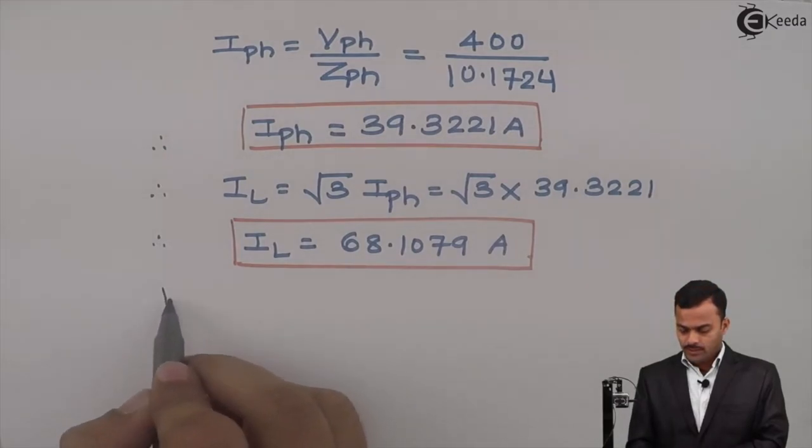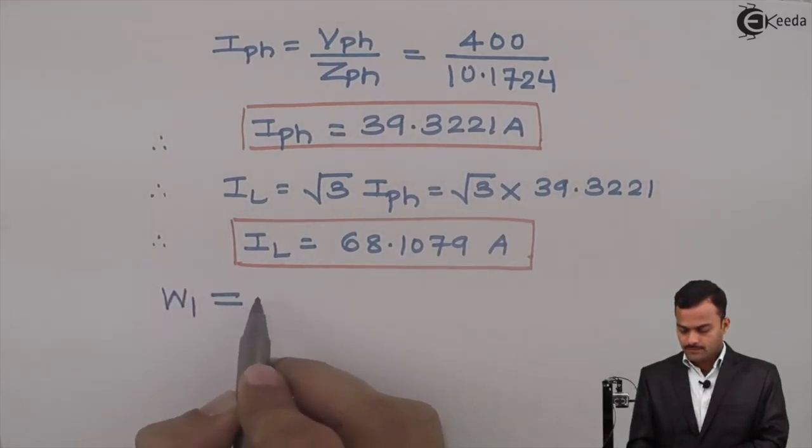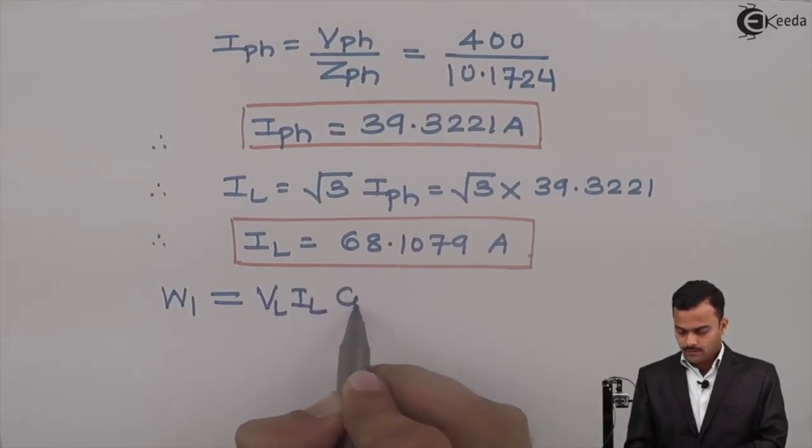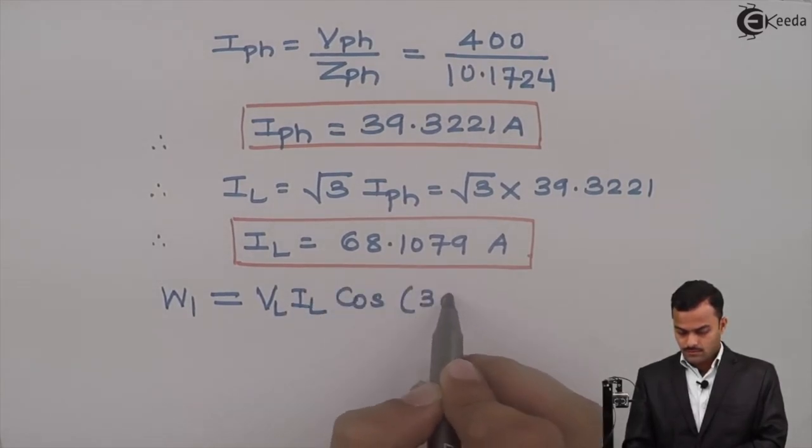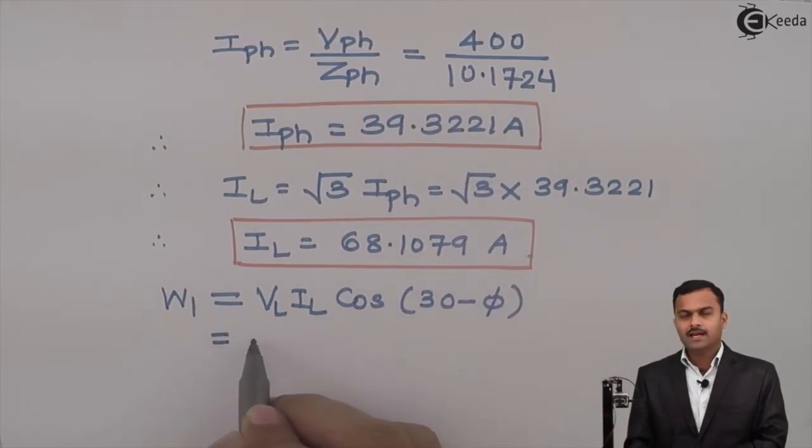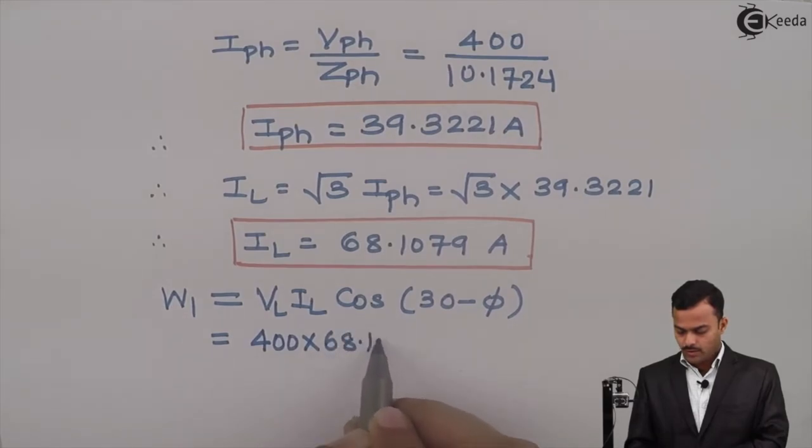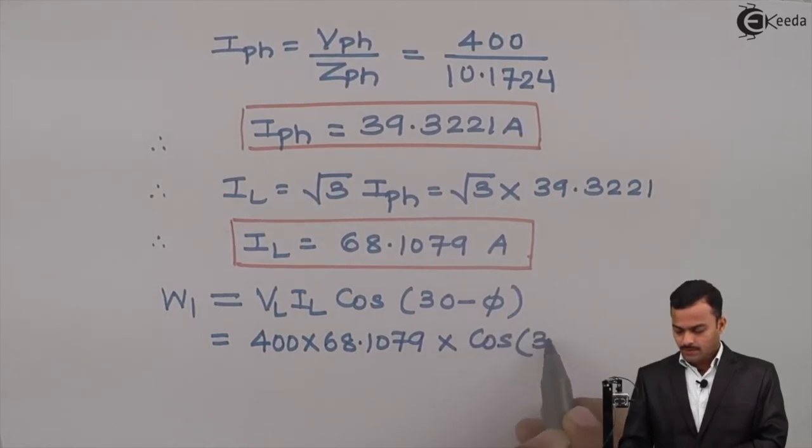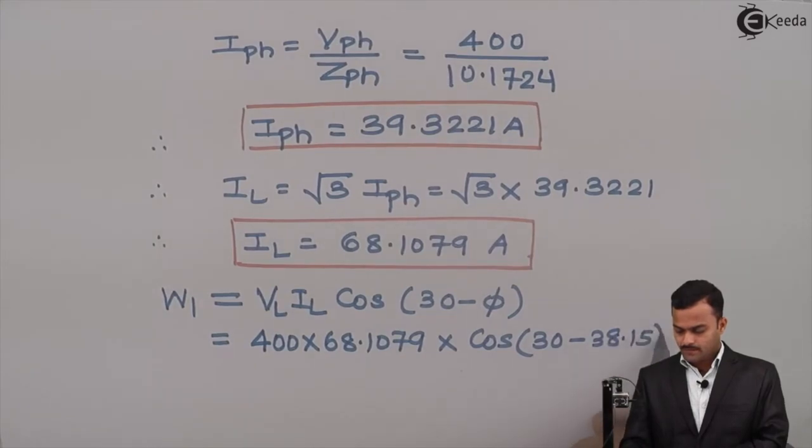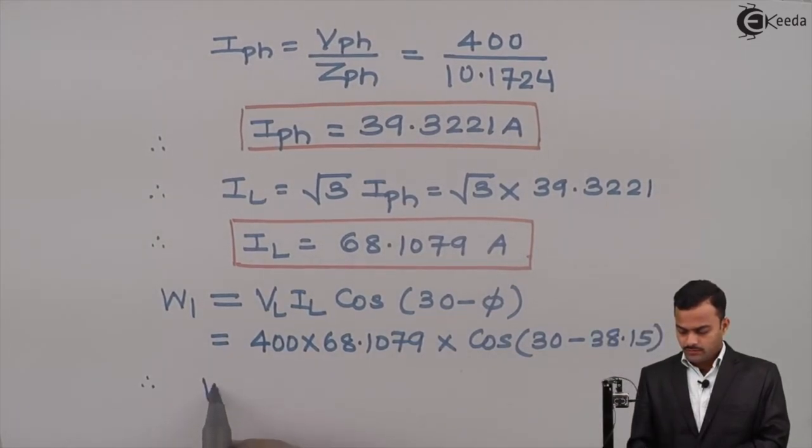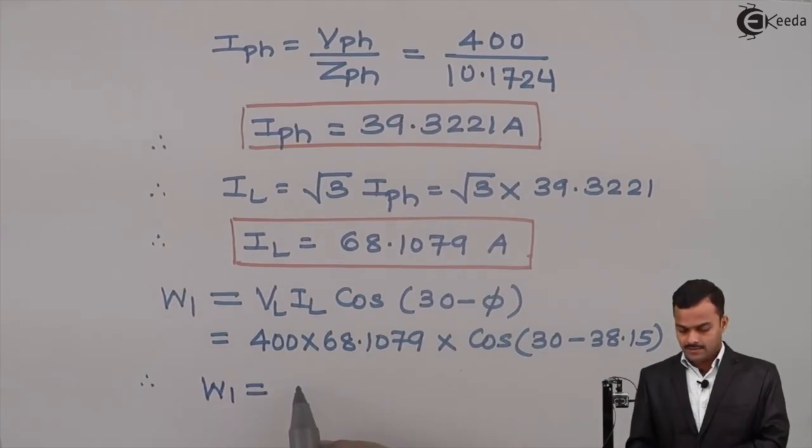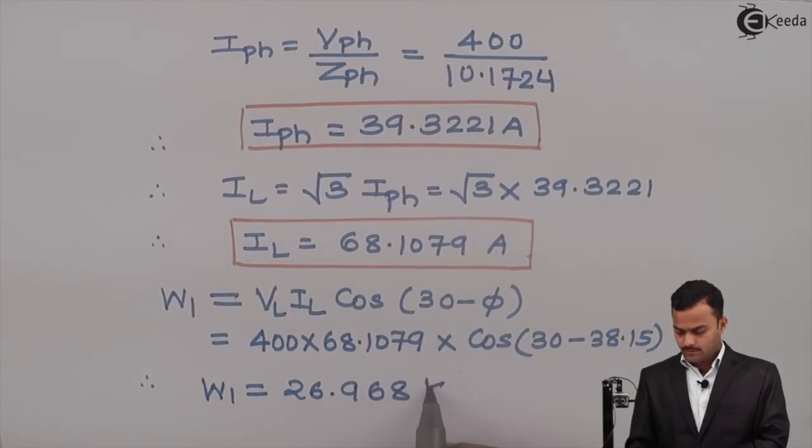Now we can get W1 and W2. So W1 equals VL times IL times cos(30 minus phi). VL is 400, IL is 68.1079, multiplied by cos(30 minus 38.15). If we solve, you will get wattmeter 1 reading as 26.968 kilowatts.